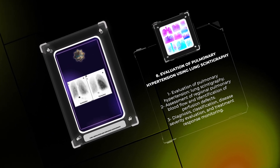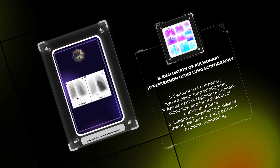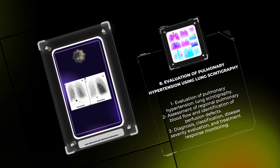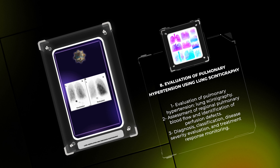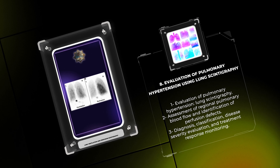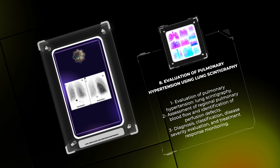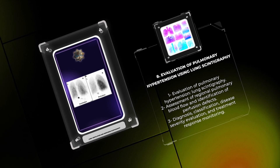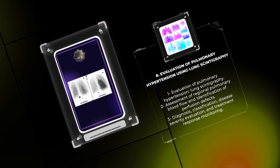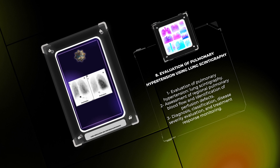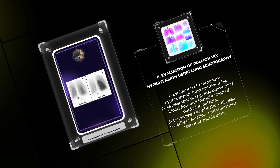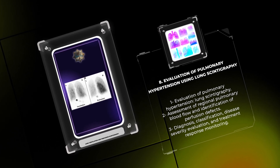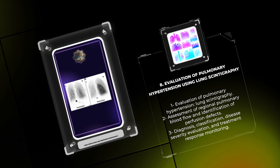Pulmonary hypertension is a complex condition associated with significant morbidity and mortality. Lung scintigraphy plays a vital role in the evaluation of pulmonary hypertension by assessing the regional pulmonary blood flow and identifying perfusion defects. This information helps in diagnosing and classifying pulmonary hypertension, evaluating disease severity, and monitoring treatment response. Scintigraphy, in combination with other imaging modalities, aids in the comprehensive evaluation of this challenging condition, contributing to optimal patient management.